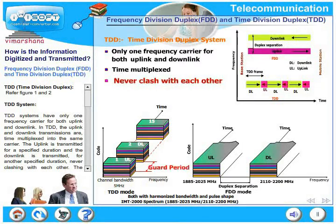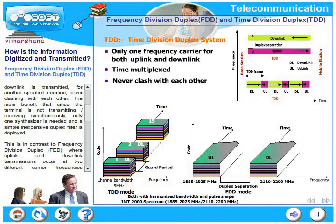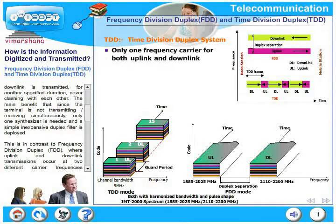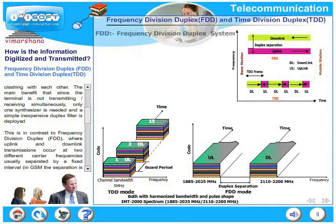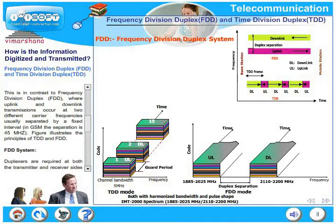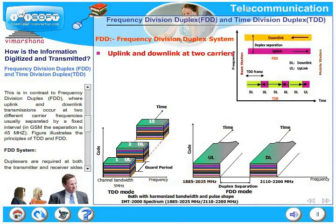The main benefit is that since the terminal is not transmitting or receiving simultaneously, only one synthesizer is needed and a simple inexpensive duplex filter is deployed. This is in contrast to frequency division duplex, where uplink and downlink transmissions occur at two different carrier frequencies, usually separated by a fixed interval.